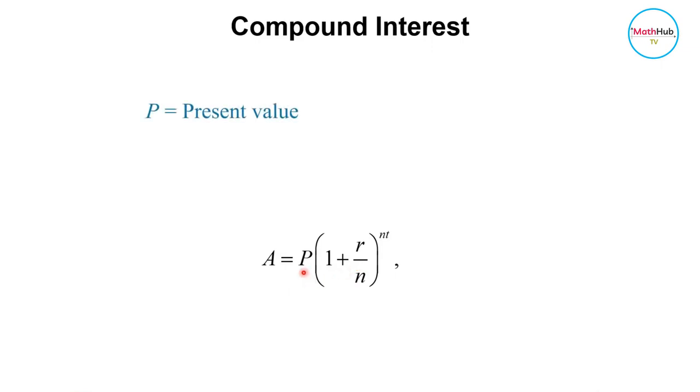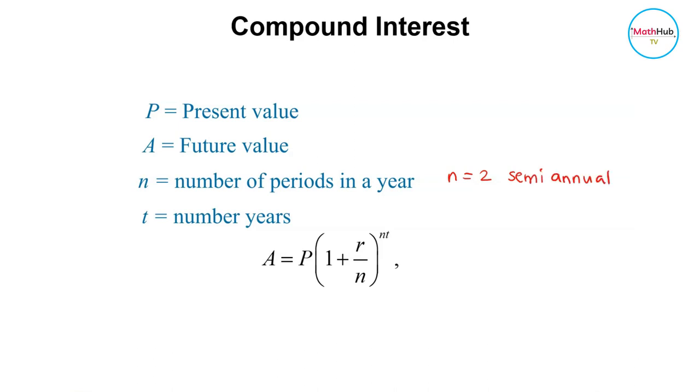Here, this is still the principal amount, and this is the amount of money you have after the compound interest is applied. So this is the amount of money in the account after 3 years. N is the number of times per year. Here, N is equal to 2 if you say semiannual. If it's annual, N is just equal to 1. Then you have the original formula.